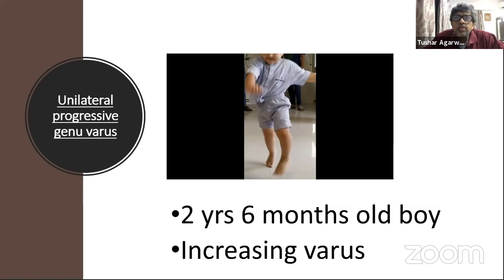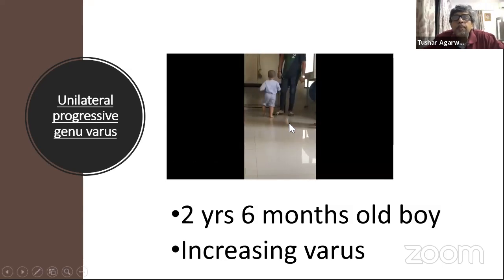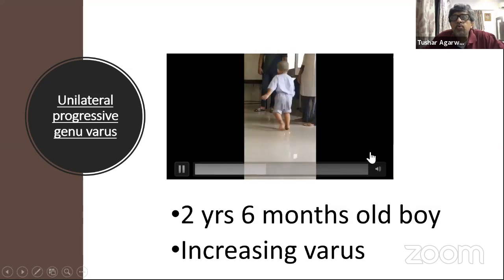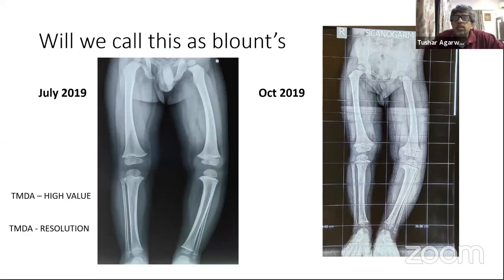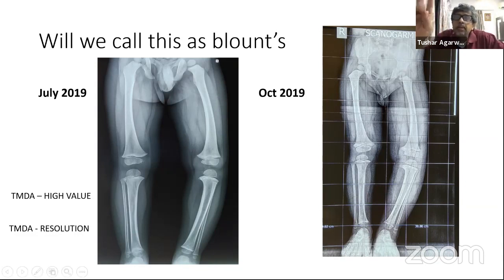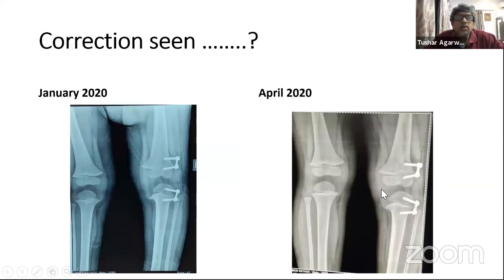This is a unilateral varus case in a two-year-old child. Two x-rays from July 2019 and October 2019 don't seem to be showing spontaneous correction and the parents were getting restless. So here we did a guided growth for both femur and tibia.